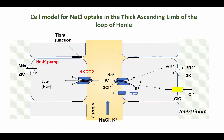The basolateral side of the cells in the thick ascending limb have a very high chloride permeability, due to the presence of a number of chloride channels, for example CIC. So now you have inside the interstitium sodium and chloride — the salt. You have reabsorbed the salt into the interstitium.